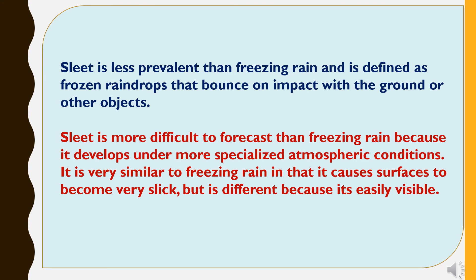Sleet is less prevalent than freezing rain and is defined as frozen raindrops that bounce on impact with the ground or other objects. Sleet is more difficult to forecast than freezing rain because it develops under more specialized atmospheric conditions. It is very similar to freezing rain in that it causes surfaces to become very slick, but is different because it is easily visible.